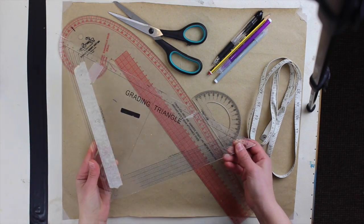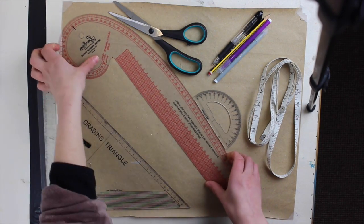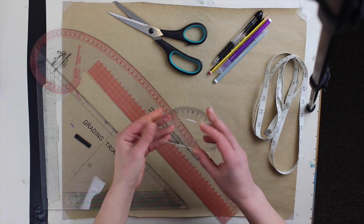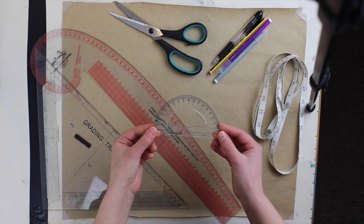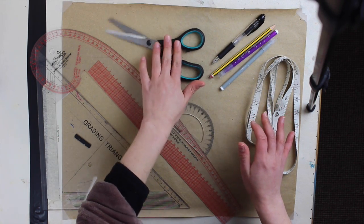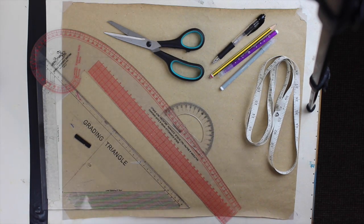Alright, so here are some of the stuff that I'm going to be using. Some various rulers, it doesn't matter what you're using really. I'm going to use a protractor—you will need that for angles. Some paper, some packing paper is brilliant, some marking tools, scissors, and a measuring tape.